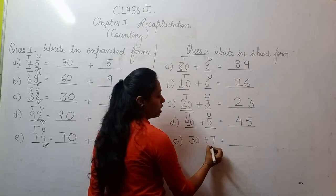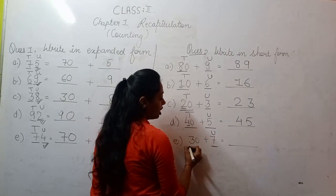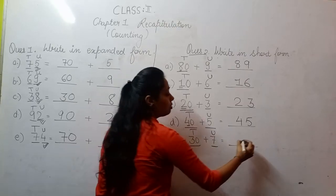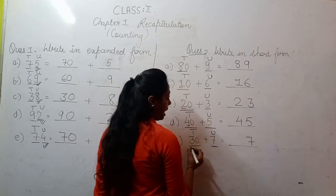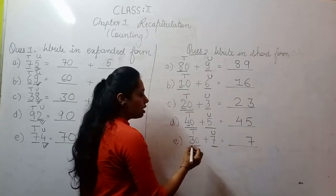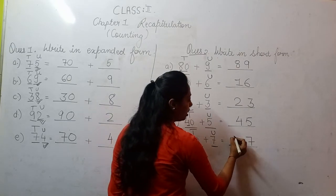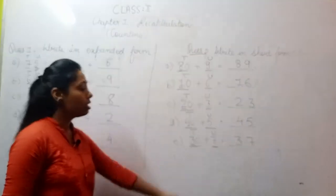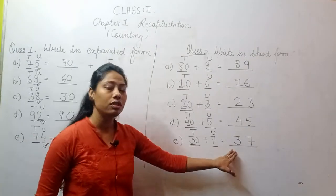Moving to E part: 30 plus 7. 7 is your units place and 30 is your 10th place. Write the units place digit first, then from 30, ignore the 0 and what remains is 3. So the number becomes 37 — 30 plus 7 is 37.